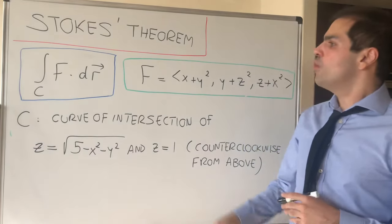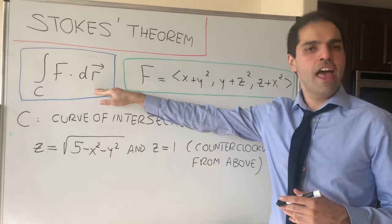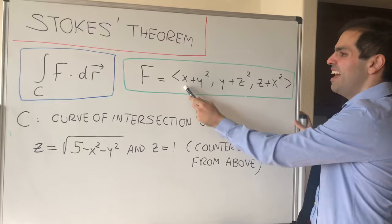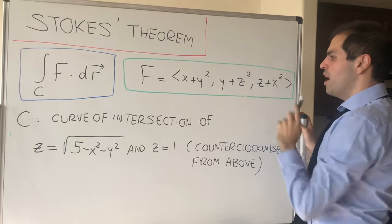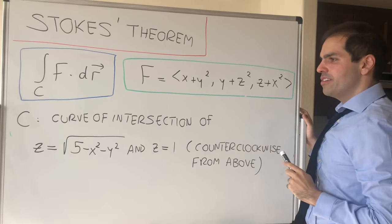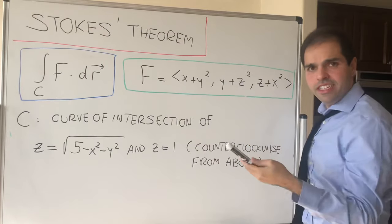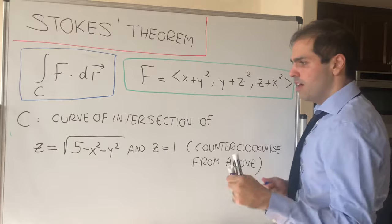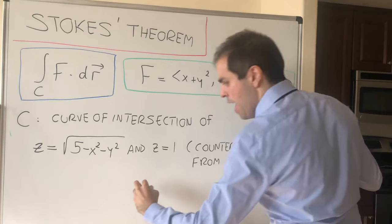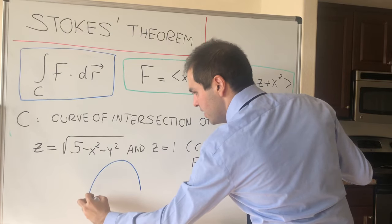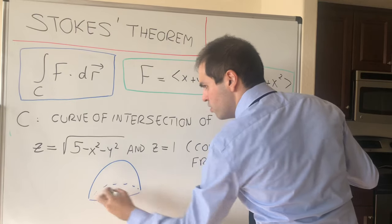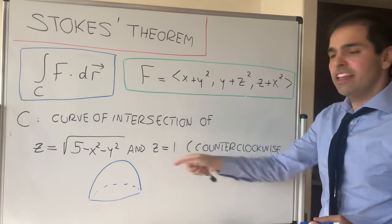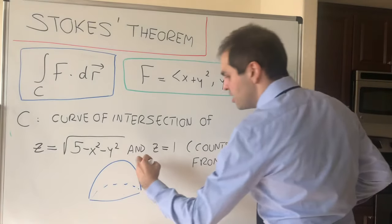Today we'll calculate the line integral of f·dr, where f is this adorable vector field: (x + y², y + z², z + x²), and where C is the curve of intersection of two surfaces — on the one hand, the hemisphere z = √(5 − x² − y²), and the plane z = 1.